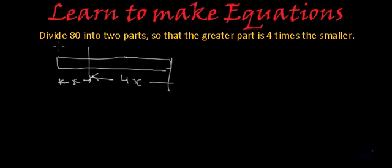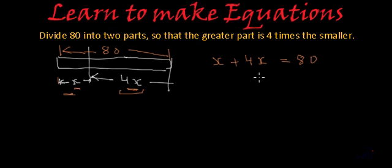So if this was total 80, then the two parts which are x and 4x, this will be together 80. That means x plus 4x will be 80, right? Because these two are the parts of 80.